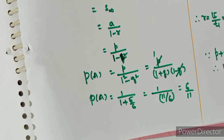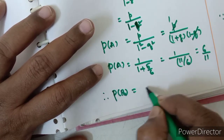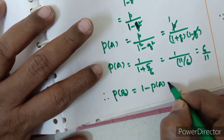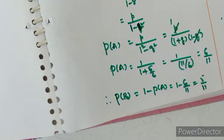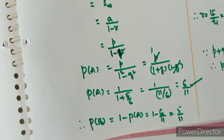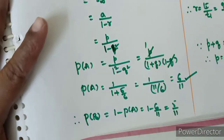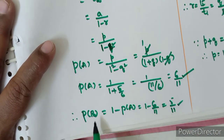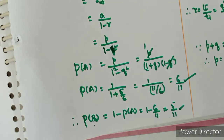Probability for B to win the game is 1 minus P(A), which is 1 minus 6 by 11, giving 5 by 11. Comparing, A has more chance than B. This is the probability for B to win the game and this is the probability for A to win the game. Very very important 4 marks question.